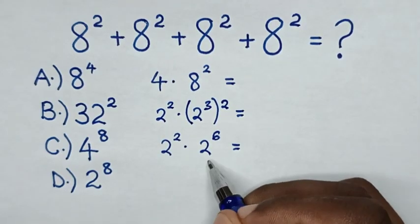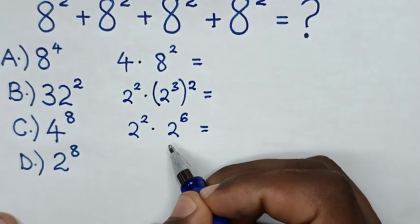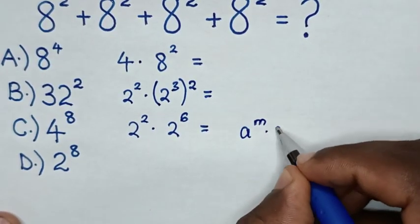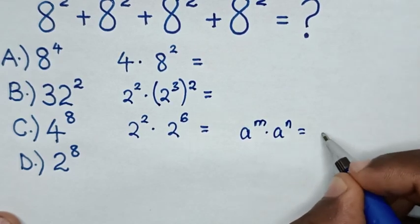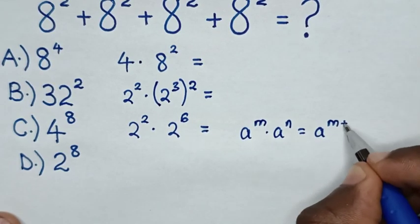From here I'm at a question of exponent, so we'll apply the rule: A power m times A power n is equal to A power m plus n.